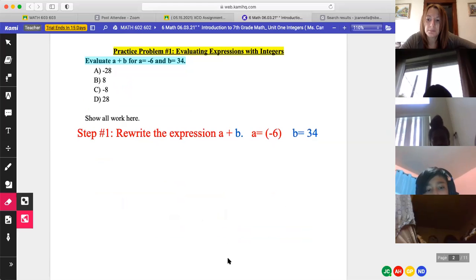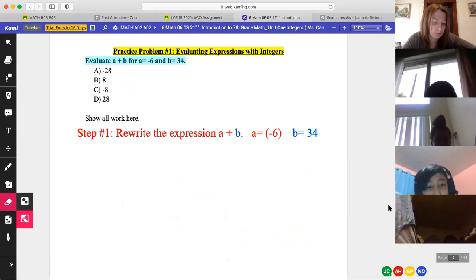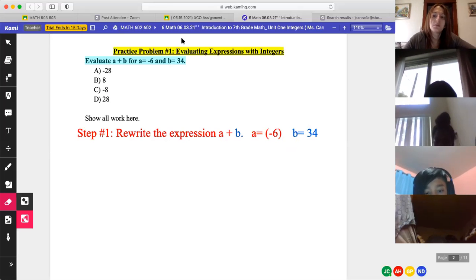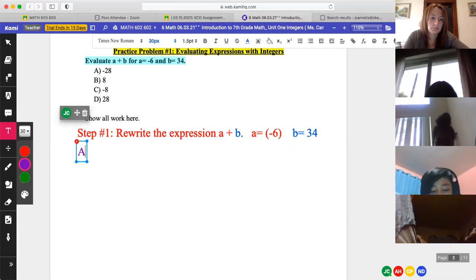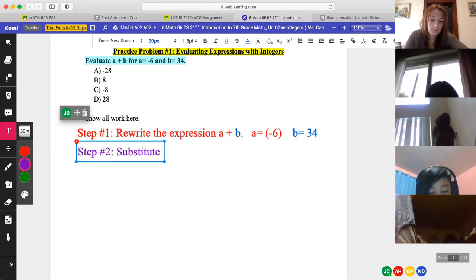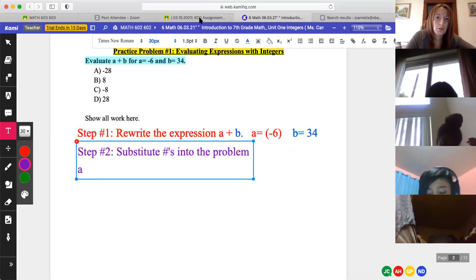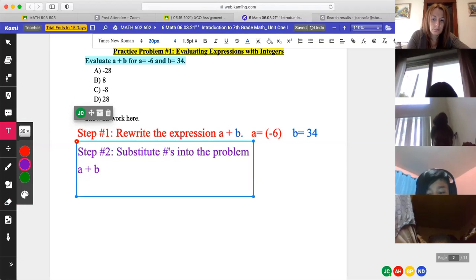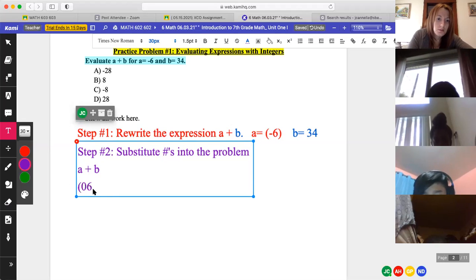Problem number one. Let's hear from Ms. Leanna Sanchez. Please read it and tell us how you do it. All right. It says evaluate A plus B for A equals negative six and B equals 34. All right. So step one, rewrite the expression. Yeah, hold on. It's a little wonky. Rewrite the expression A plus B. A equals negative six and B equals 30.